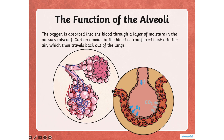When you breathe, the oxygen is absorbed into the blood through a layer of moisture in the air sacs — the alveoli. Carbon dioxide in the blood is transferred back into the air, which then travels back out through the lungs. You can see the bronchioles, the air sacs, and the blood communication through veins shown here.